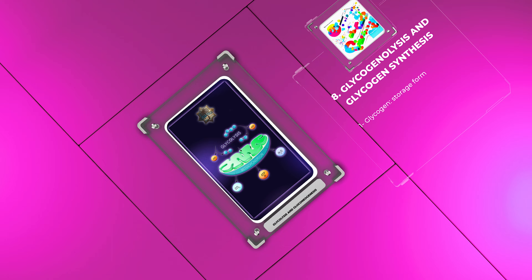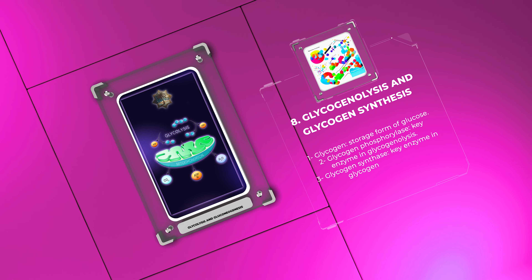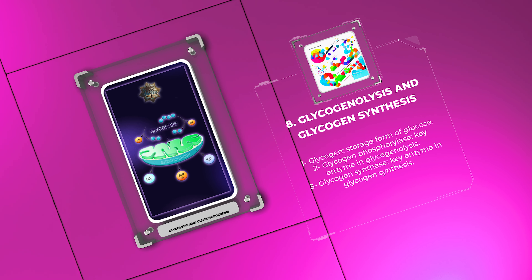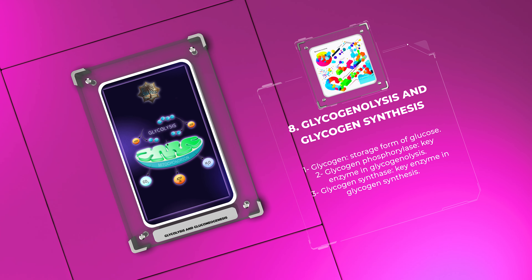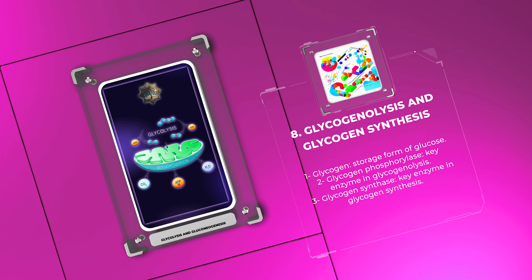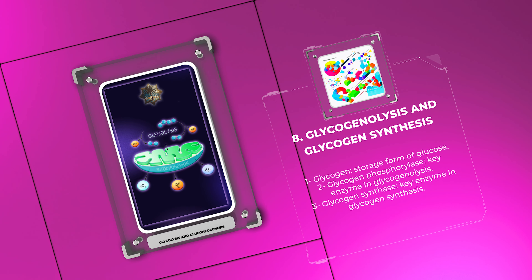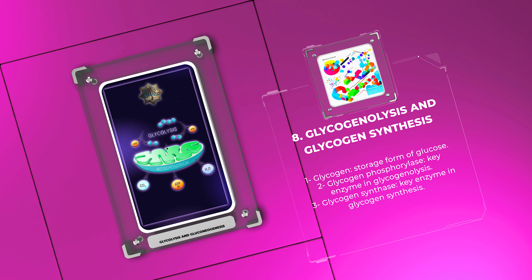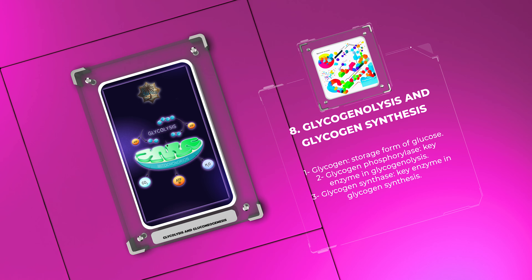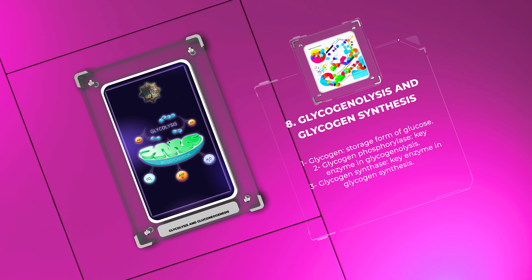Glycogen serves as a storage form of glucose, ensuring a readily available source of energy. Glycogen phosphorylase and glycogen synthase are two key enzymes involved in glycogenolysis (breakdown of glycogen) and glycogen synthesis, respectively. The regulation of these enzymes by hormonal signals helps maintain glucose homeostasis during times of fasting and feasting.